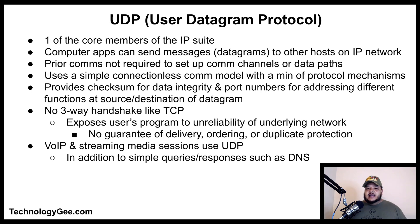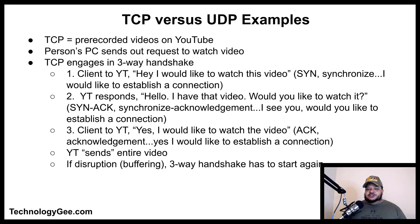Voice over IP, streaming media sessions, and simple queries and responses such as DNS use UDP. An example of TCP can be thought of in terms of pre-recorded videos on YouTube, like the one you're currently watching. A pre-recorded video is a video already uploaded to YouTube sitting on a YouTube server. When a person uses their computer to send out a request to watch this pre-recorded video, TCP engages in what is known as a three-way handshake.